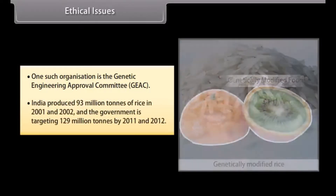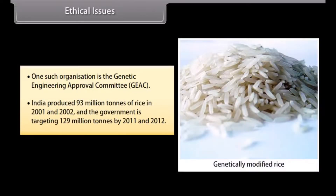India produced 93 million tons of rice in 2001 and 2002, and the government was targeting 129 million tons by 2011 and 2012.